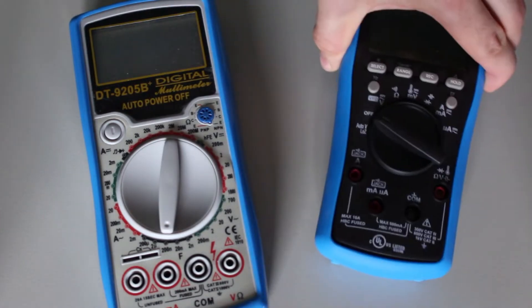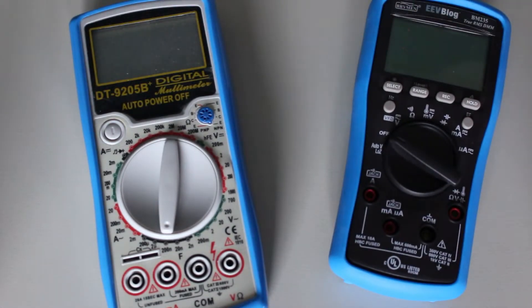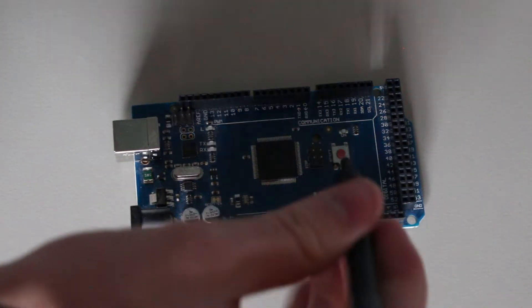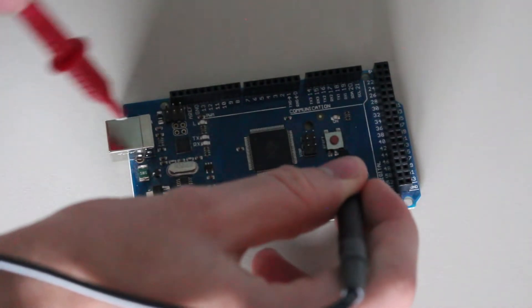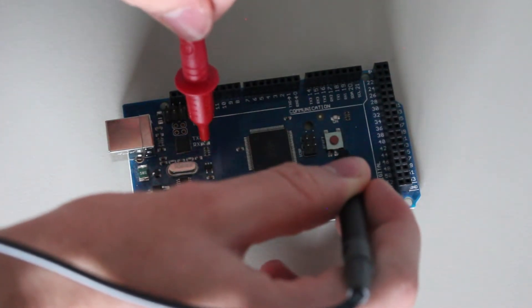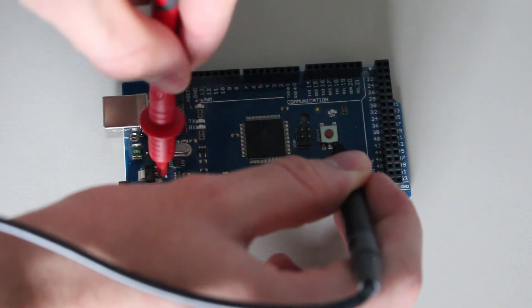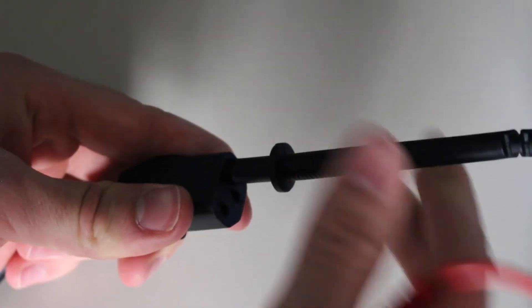Now we can dive into a very important aspect of these multimeters that sets the cheap apart from the quality, and that is safety. Now you can ignore many of these safety features if you find that the most you are doing with your multimeter is reading from your Arduino circuit. But if you have any intention of messing with AC mains voltage or high voltage in general, then you really should pay attention to this part.